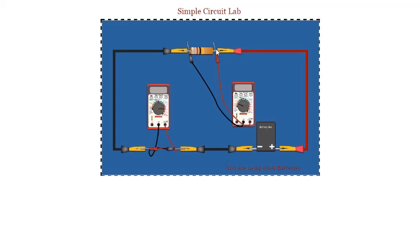The voltmeter, notice it's not an integral part of the circuit. I could disconnect either one of these leads from the voltmeter and charges would continue to go around this loop. It wouldn't matter.